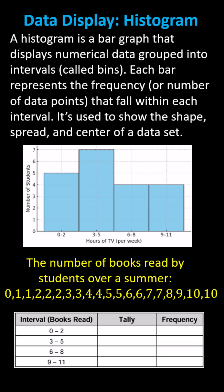is a bar graph that displays numerical data grouped into intervals called bins. We have the intervals or bins listed along the horizontal axis. The bins are 0 to 2, 3 to 5, 6 to 8, 9 to 11.